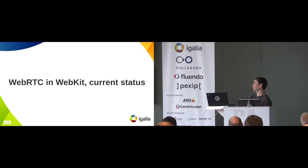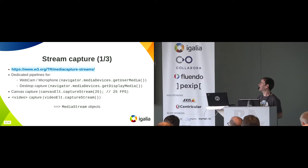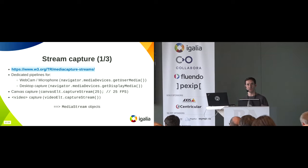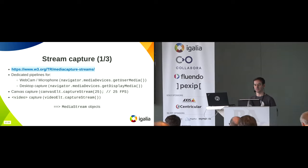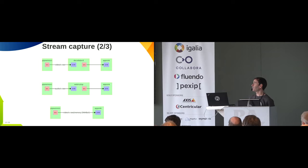So, what about GStreamer WebKit? What's working, what's not? First, if you want to do a video call you need to capture streams, which is done with a spec called Media Capture and Streams. You can capture your webcam or desktop applications, and you can also capture a canvas or even a video element. All these APIs provide a uniform JavaScript object called MediaStream representing the stream — it's a set of tracks you can see as a live stream of audio and video data. In WebKit we have different pipelines to handle that. You can see one for webcam using PipeWire — I've simplified the pipelines to fit on the slides.